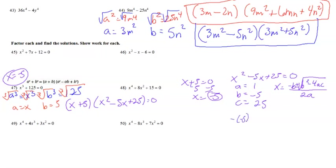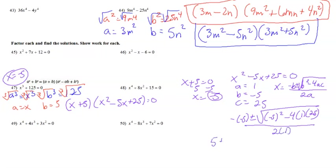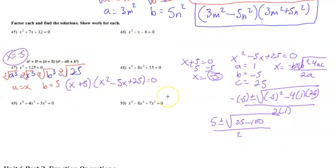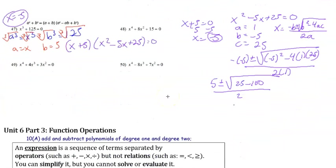Substituting, we get x = [−(−5) ± √((−5)² − 4(1)(25))] / (2×1). The two negatives cancel, giving x = [5 ± √(25 − 100)] / 2 = [5 ± √(−75)] / 2.